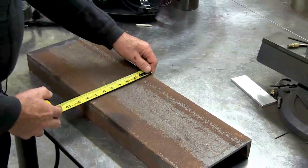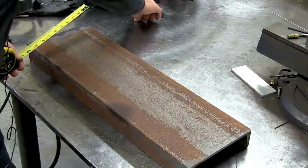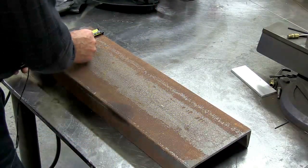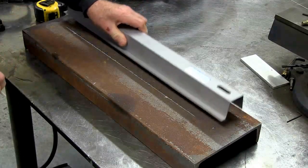First thing to do is to scribe a line. We use what's called soapstone. It's going to be approximately in the center of this steel channel. It's an 8-inch channel, so we're going to put it at 4 inches. We'll grab a straight edge and scribe the line.